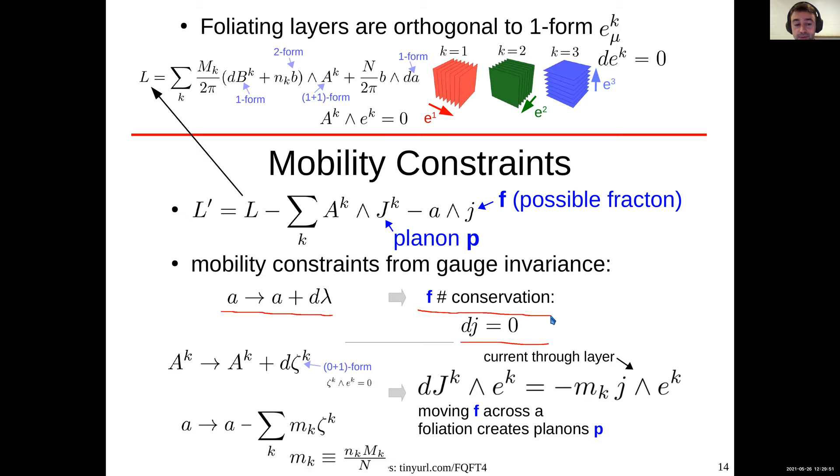If we do a gauge transformation of big A, then we'll also have to transform little a like this. And this gives us a more interesting constraint. Now we get this constraint here. So what does this mean? This last term here, it's non-zero whenever you have some current little j that goes through a layer. And then this first term is non-zero whenever you have a divergence of current big J. So whenever you have current little j moving through a layer, what this is saying is that whenever some fracton little j tries to move through a layer, you have to create or destroy planon particles. And this is exactly consistent with the physics of the X-cube model. You can move fractons, but only at the cost of creating additional planon excitations.